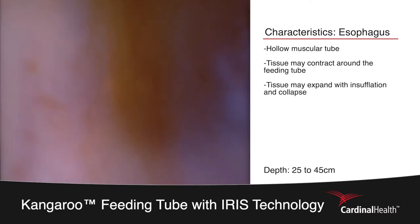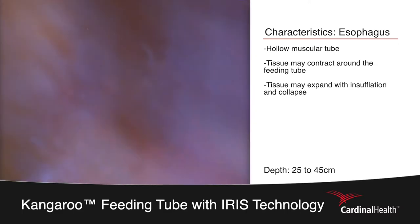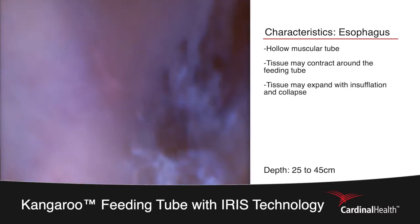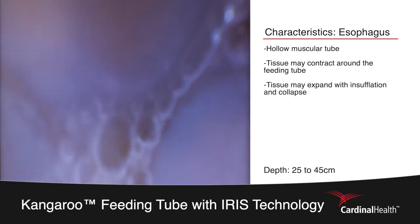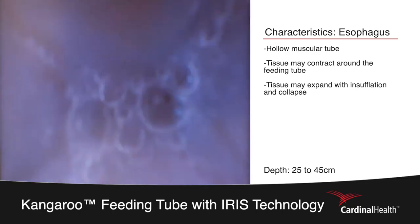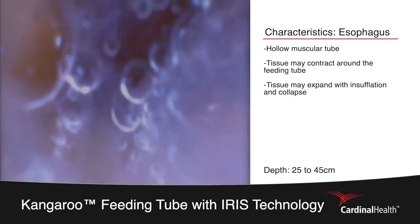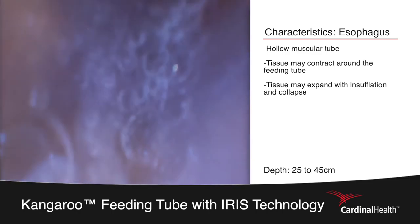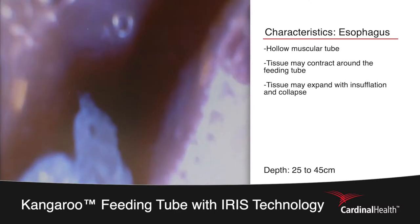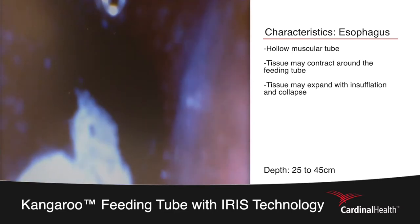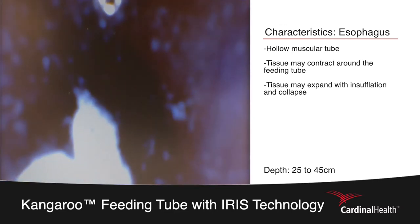At around the 30 centimeter mark we will pause to determine that we are in the correct location. At this point you can add air utilizing the insufflation device to create space and then visualize the esophagus contract around the tip of the feeding tube.